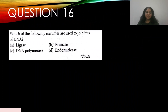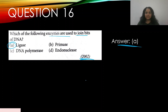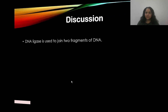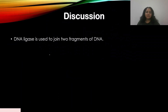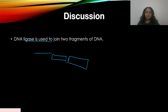Question 16: Which of the following enzymes are used to join bits of DNA? This appeared in 2002. Options: A — ligase, B — primase, C — DNA polymerase, D — endonuclease. The answer is A — DNA ligase. DNA ligase plays an important role in joining DNA fragments together.